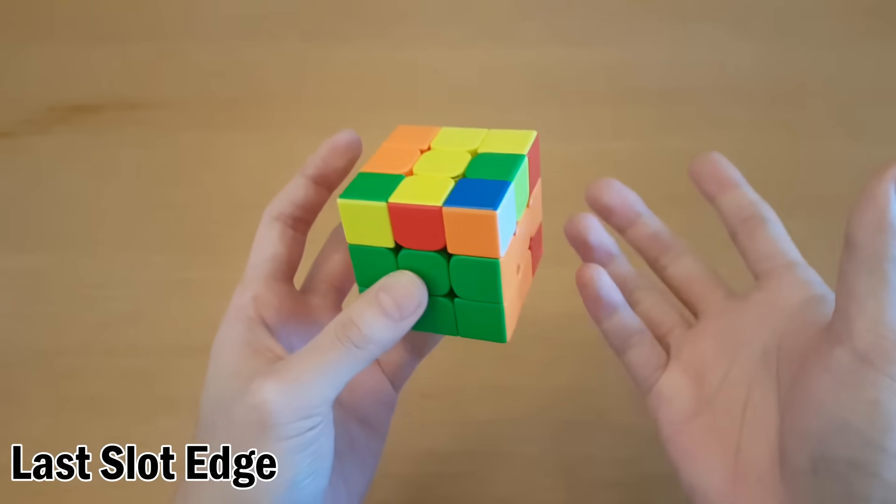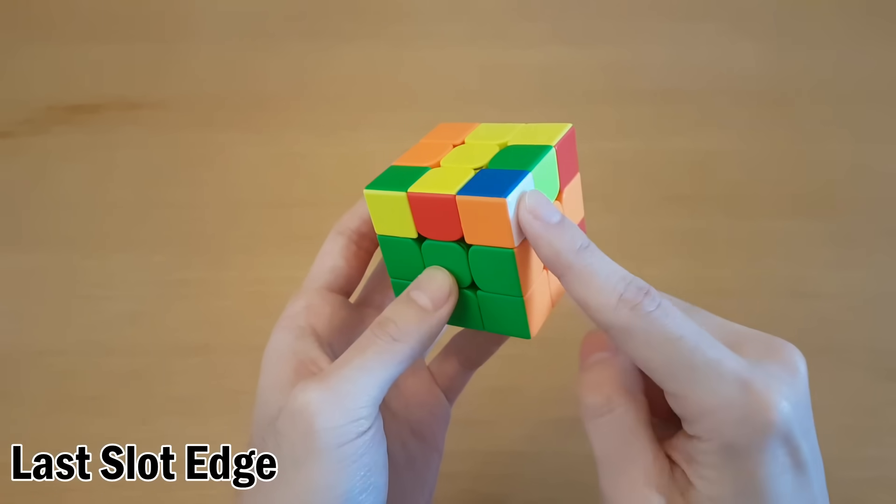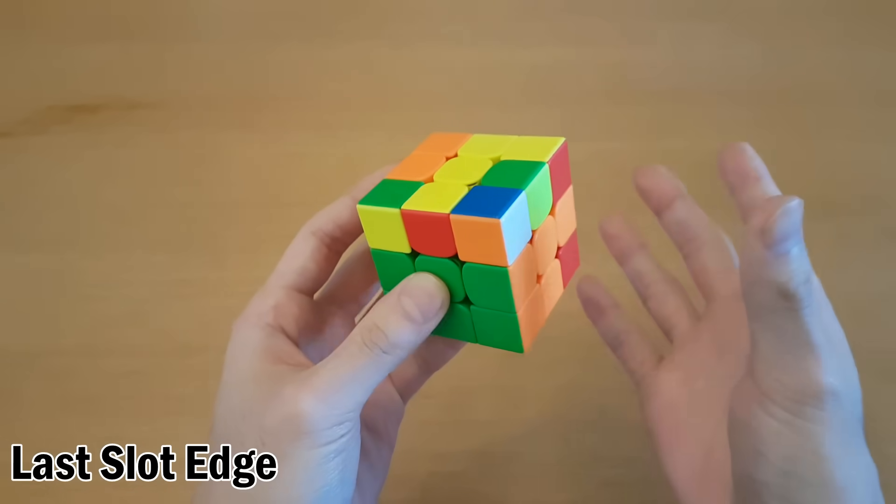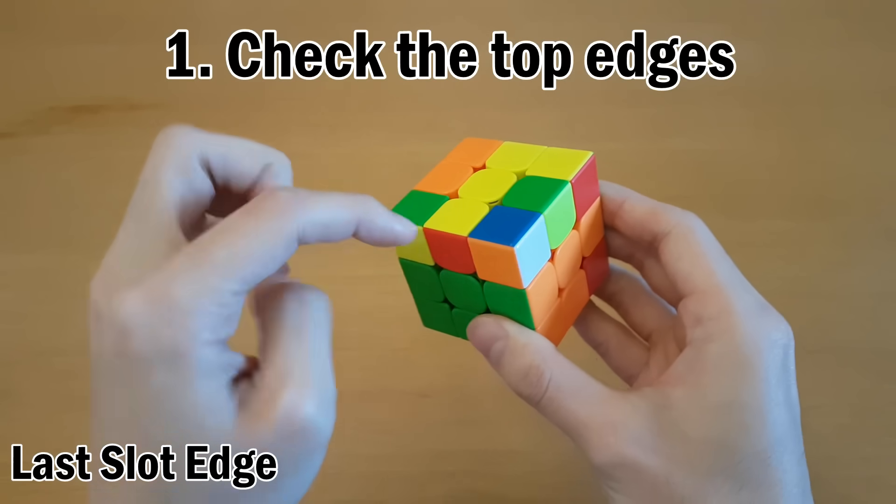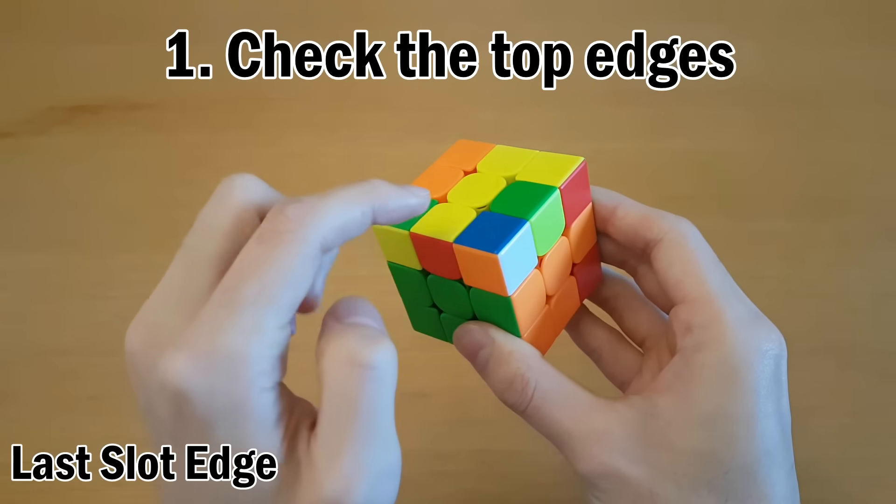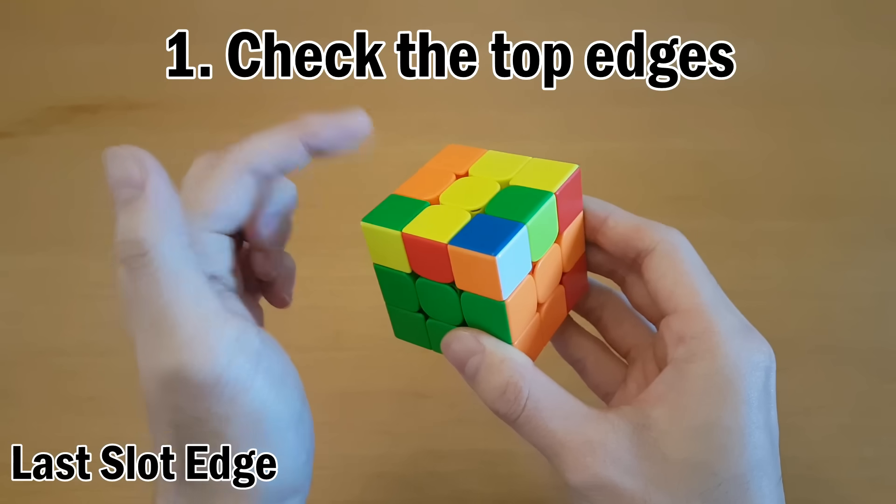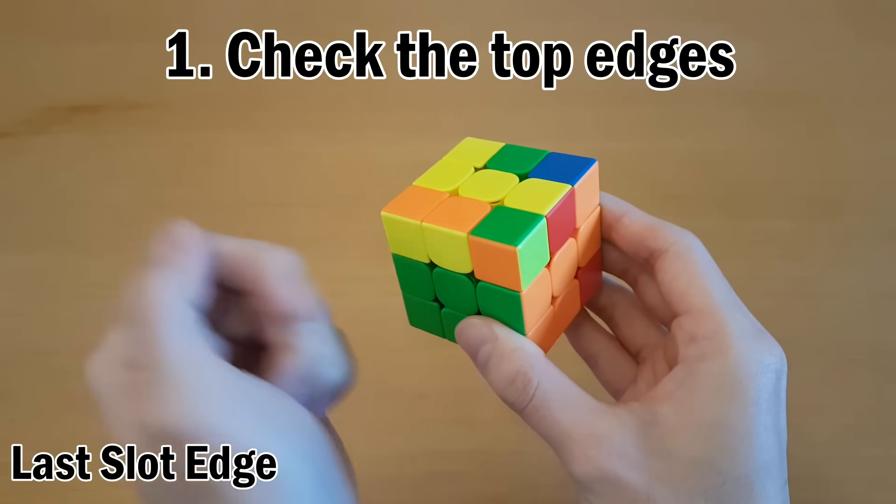We'll start by deducing last slot edges. So here three slots are solved of course, and we have one corner up here that needs to go with the edge into the back slot. Now this is pretty simple, the edge can be in one of four places on top or it can be in the back slot. To figure out if it's one of the top pieces, just look at which ones are your last layer color yellow, obviously not these three. So it could be this one.